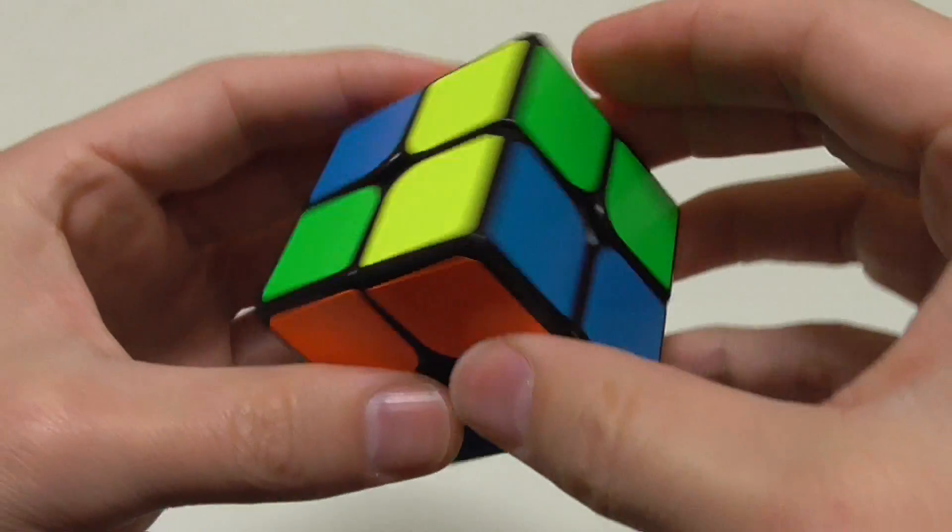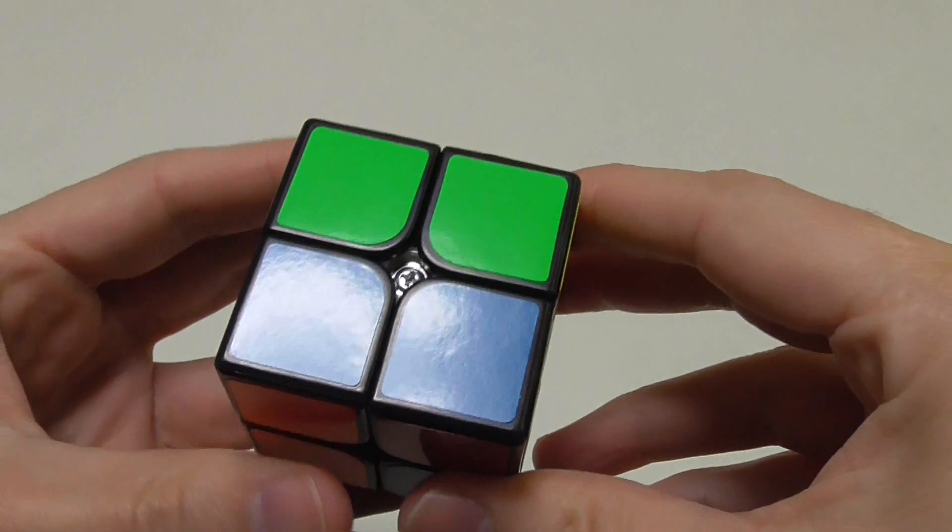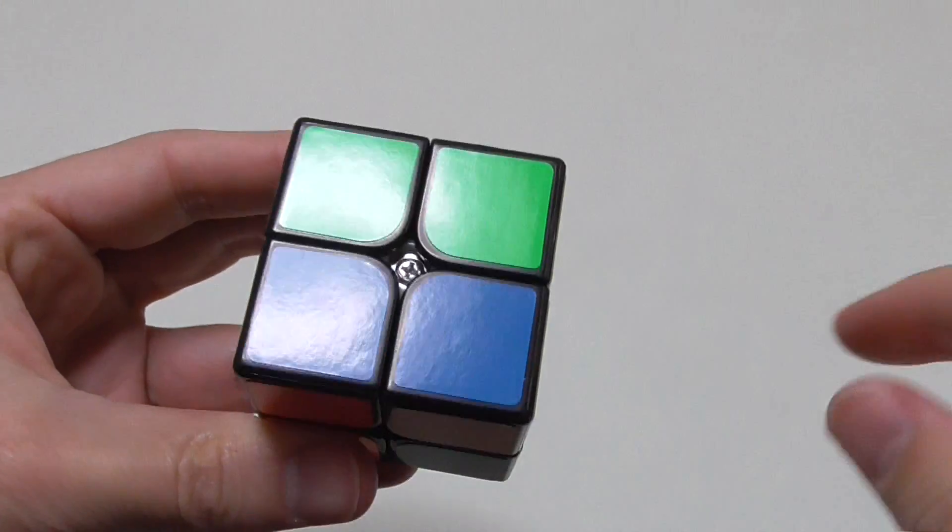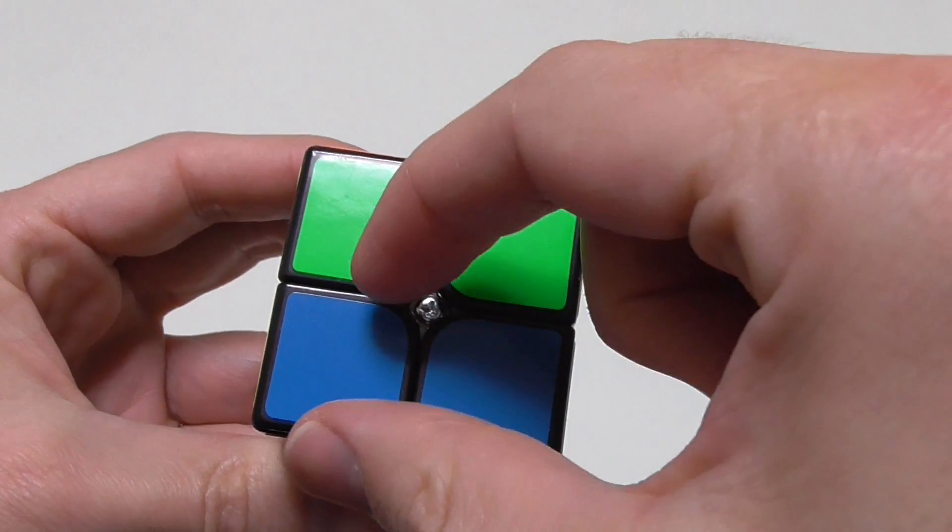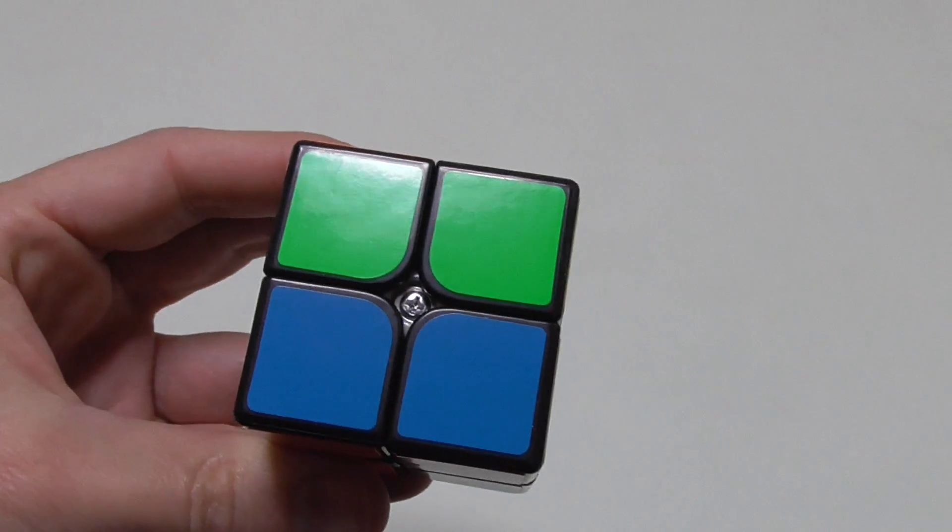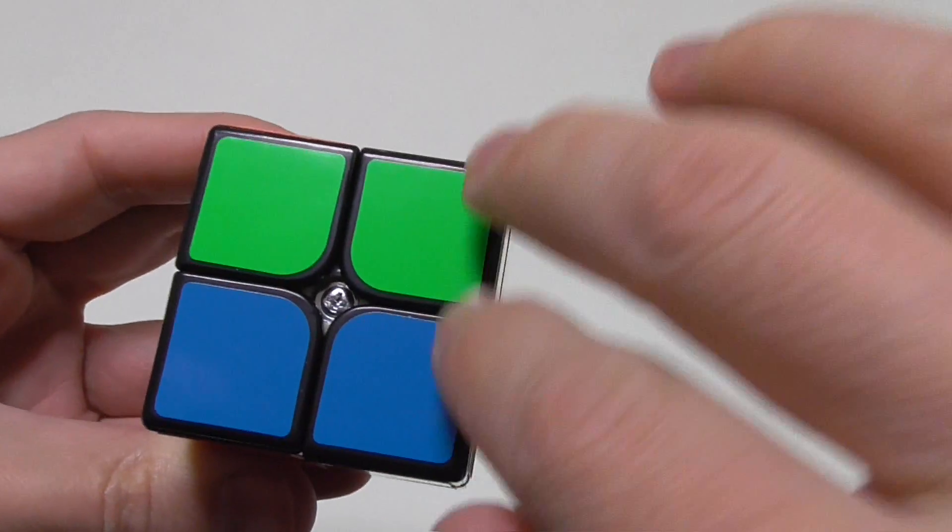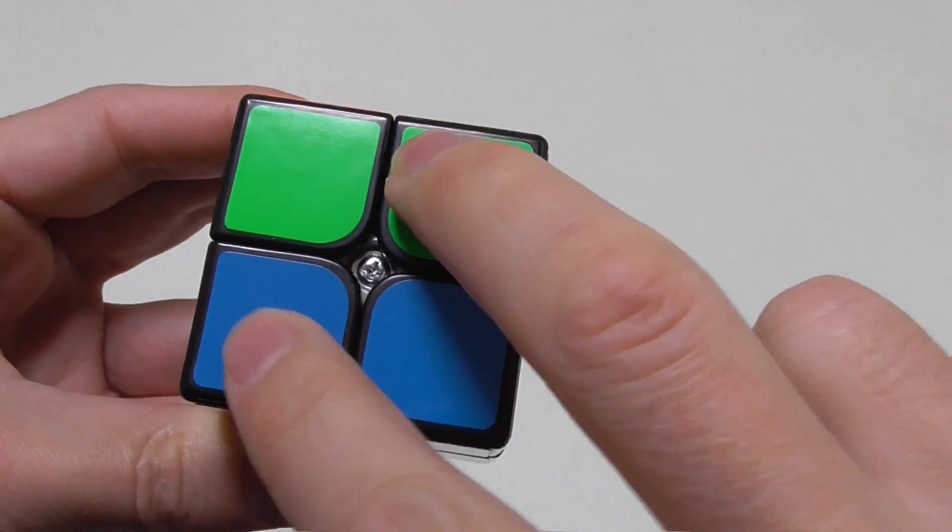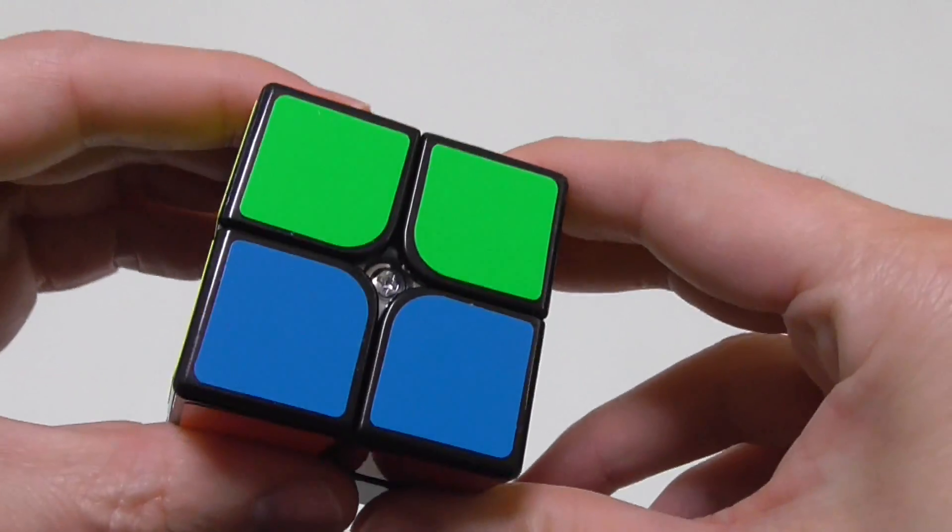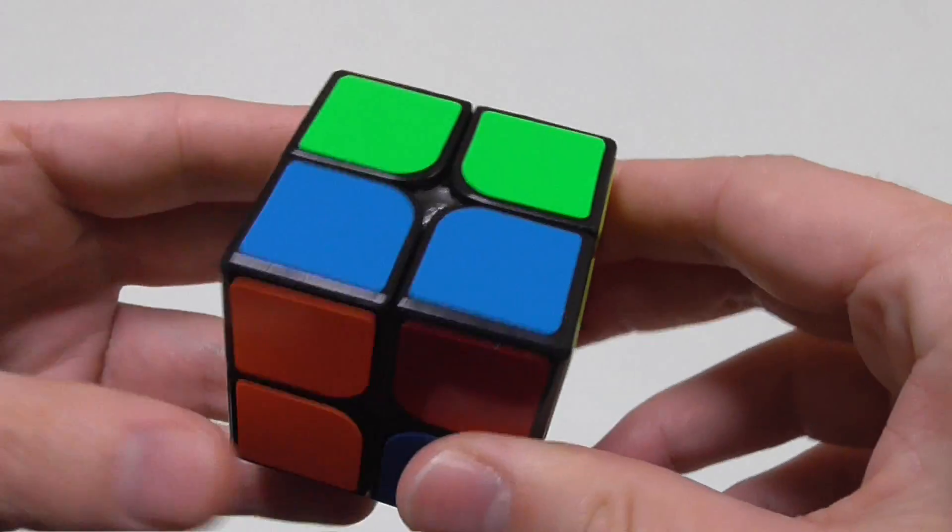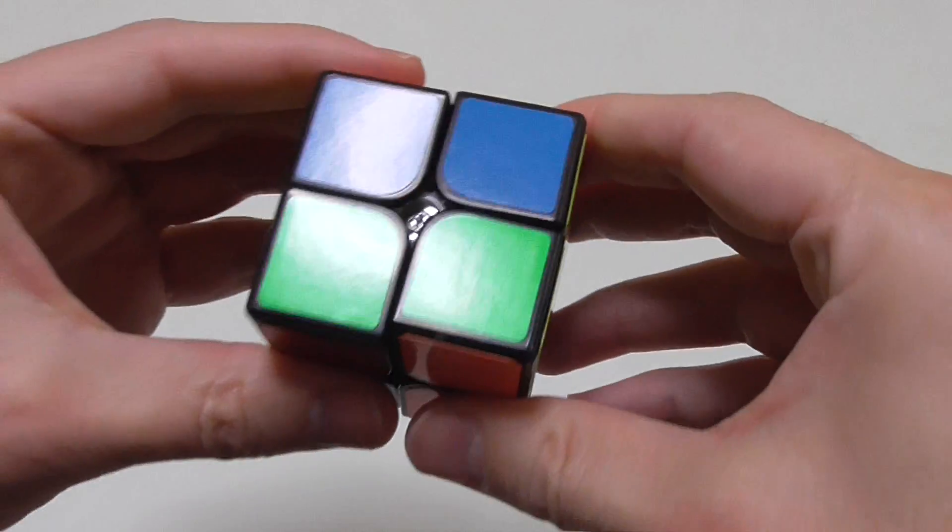Once you've got the white face sorted, you turn it so it's on the bottom, and we're now going to give this a yellow face. You might have no squares yellow. You might have one in any of the four positions, in which case you start with it at the bottom left. You might have two, in which case, if they're in a line, you keep them on the right-hand side. If they're diagonal, you keep one of them in the bottom left. If there are no yellow squares, like I've got, you can just start with any orientation. The white side's there. And you follow this algorithm.